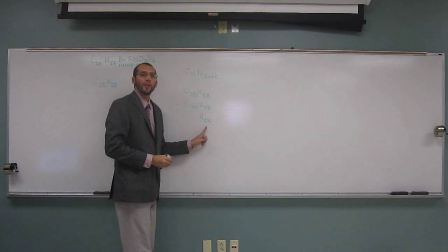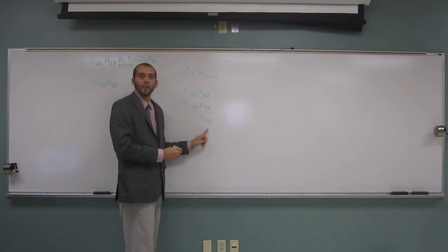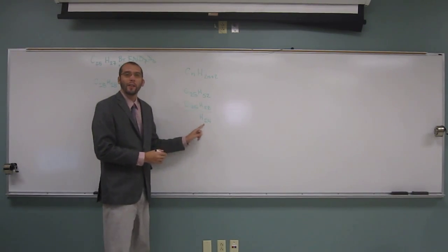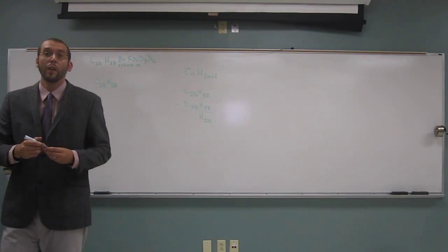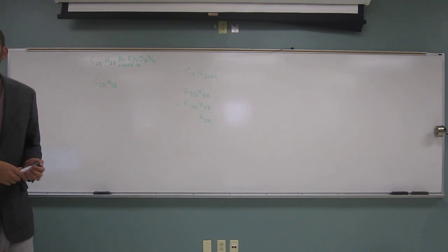So that's how many hydrogens we're missing, but that translates to how many units of unsaturation. Do you remember what we do at the end? Not exactly. Okay, so we have to take this number and divide it by 2, because for every unit of unsaturation, you're missing 2 hydrogens.